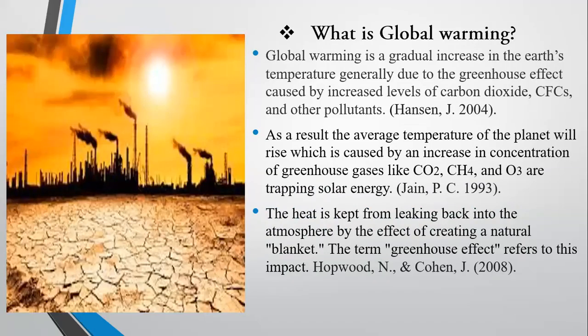First, we have to talk about what we mean by global warming. Global warming is the gradual increase in the earth's temperature due to different greenhouse effects caused by increased levels of carbon dioxide, chlorofluorocarbons, and other pollutants emitted from different sources to the atmosphere. When the average temperature of the globe rises, it causes warming of the earth's atmosphere. Those greenhouse gases are heat-trapping particles found in the lower part of the atmosphere, in the troposphere layer, and the heat is kept from leaking back by the effect of this natural blanket — the greenhouse effect.